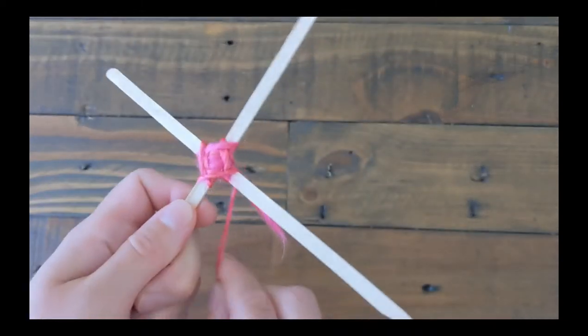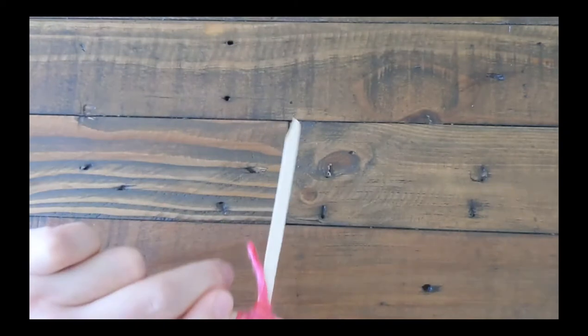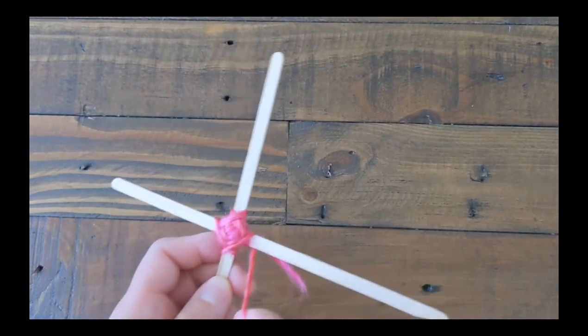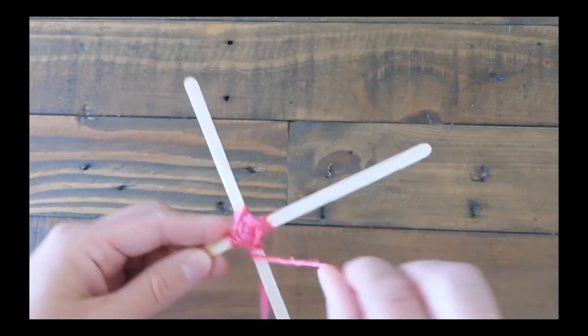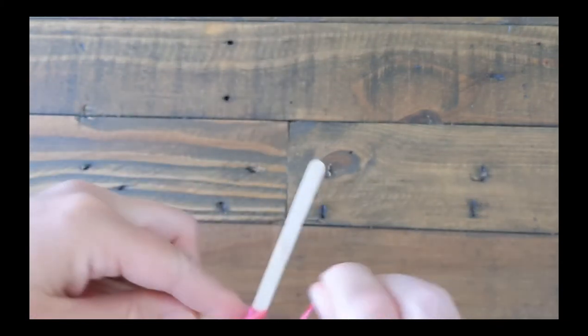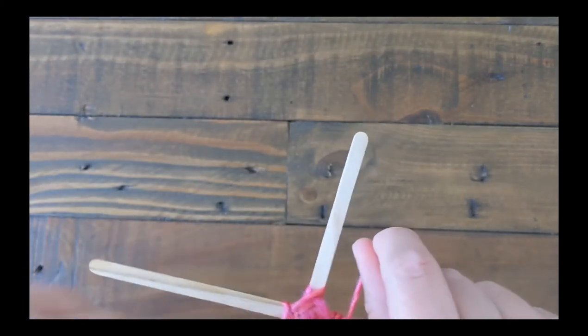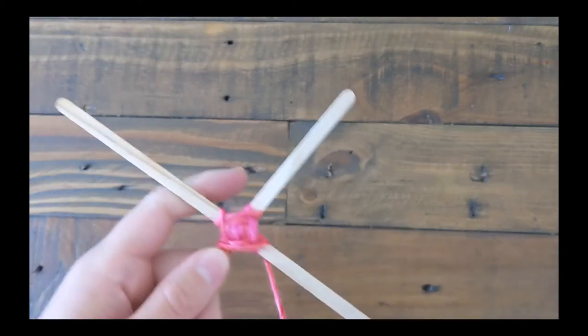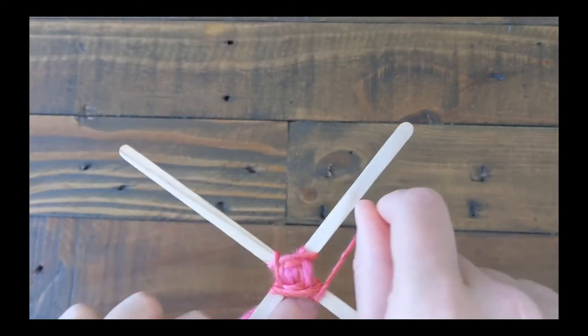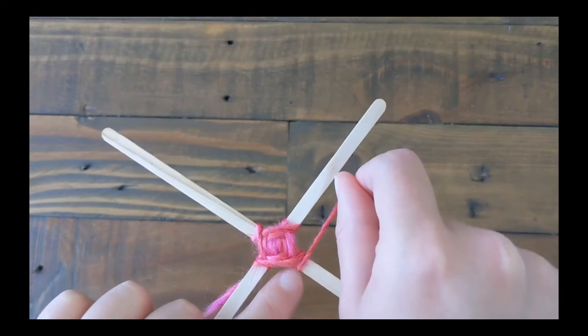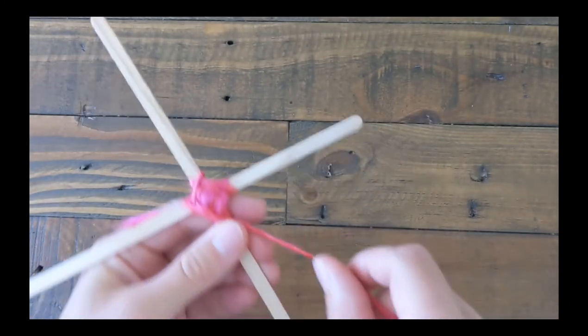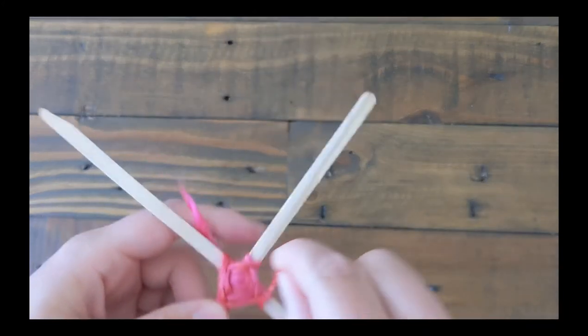So you're keeping your hand that has the yarn pretty steady, but you're just constantly rotating your sticks. And see, as I do this one, I'm incorporating that yarn and just tying it down, essentially. So around once and over.